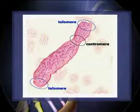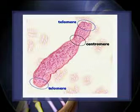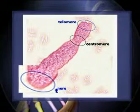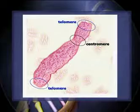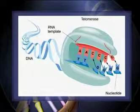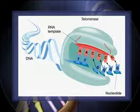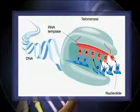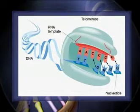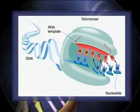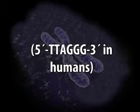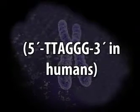Telomeres are the specialized structures at the ends of linear DNA molecules of eukaryotes. The telomeres hide the ends of the chromosome from the mechanisms within the cell that monitor DNA damage, and are also needed to overcome the problem of end replication. Most eukaryotes overcome the end replication problem with an enzyme called telomerase, a ribonucleoprotein that uses its own RNA template to add simple repeats to the 3' ends of chromosomes, elongating them. A telomere consists of up to hundreds of copies of repeated sequences of 5'-TTAGGG-3' in humans, synthesized by telomerase.